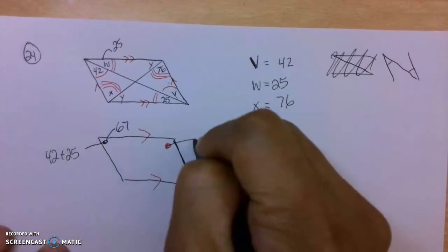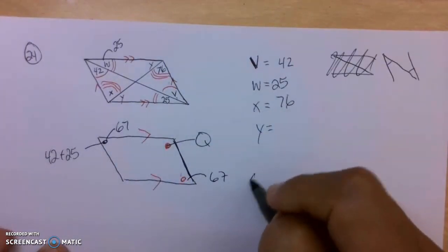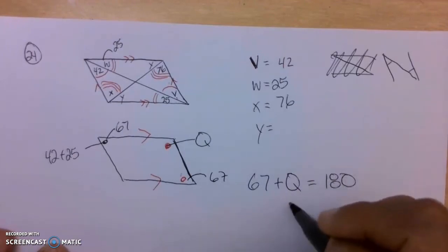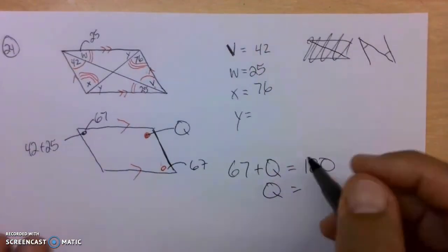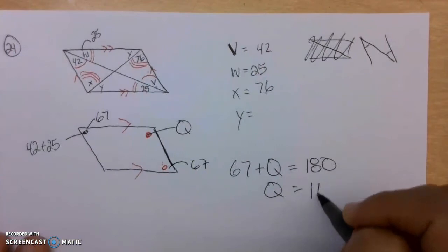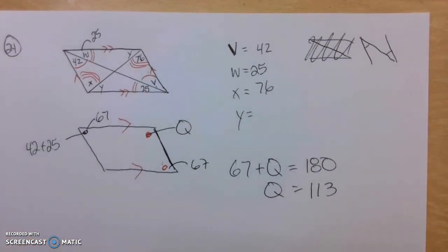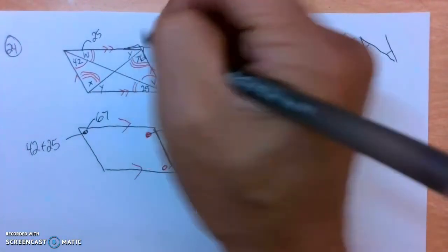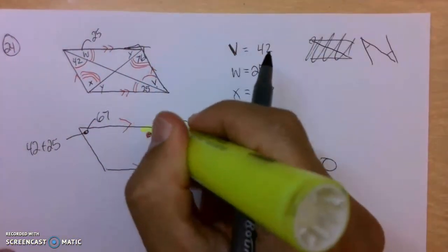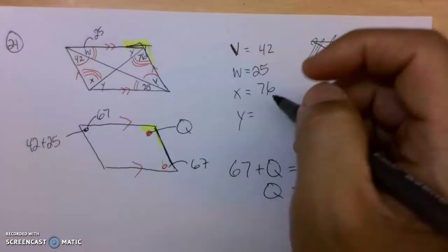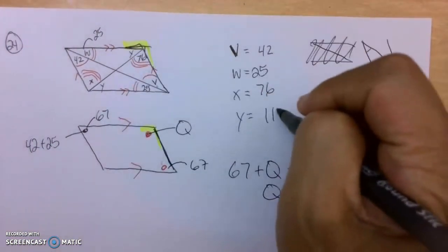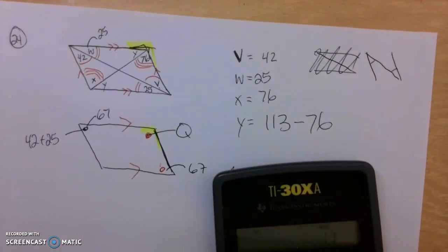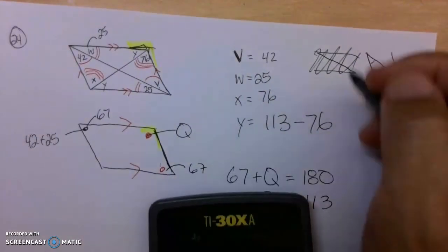So what is this? I'll just call this Q for now. So 67 plus Q is equal to 180 degrees. So Q is, what is that, 113? Alright. Now, if I look back at this entire angle here, which I called Q, is 113. So to figure out what Y is, I've got to minus out the 76. 113 minus 76. Let's see what that says in the calculator. 37 degrees.